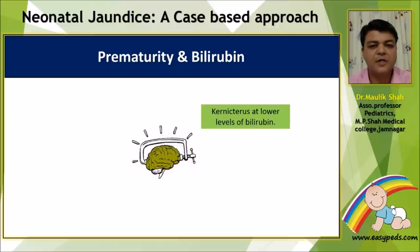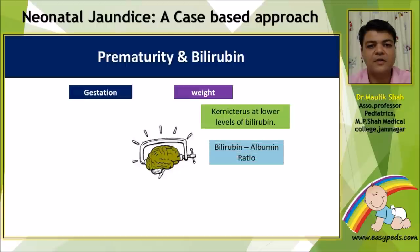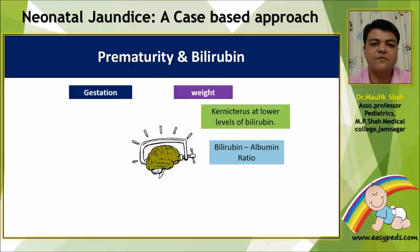We have been taught that kernicterus at lower bilirubin levels is a very common phenomenon simply because the lower the gestational age, the poorer the blood-brain barrier would be. Most of the bilirubin charts are based upon weight, while AAP now also states that the bilirubin-albumin ratio needs to be looked at while managing a premature newborn with bilirubin.